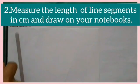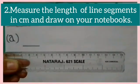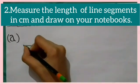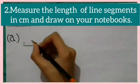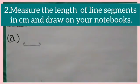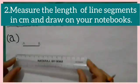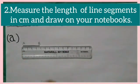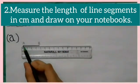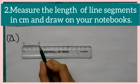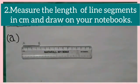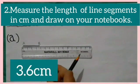Now, we will do part A of question number 2 of exercise 6.1. First, let us see what is the length of the given line segment. For that, name this line segment as AB. Keeping mark 0 of the scale on point A, you can see point B is on 3.4 centimeters. So, the length of line segment AB is 3.6 centimeters.